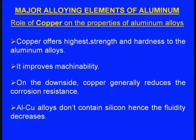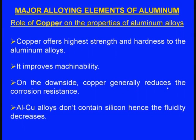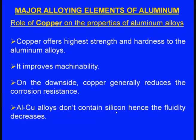The next major alloying element of aluminum is copper. Copper offers the highest strength and hardness to aluminum alloys. The most commonly used alloy is duralumin, which contains copper — that is why duralumin is very hard and strong. It improves machinability, but on the downside copper generally reduces corrosion resistance. Aluminum-copper alloys do not contain silicon, hence the fluidity decreases.